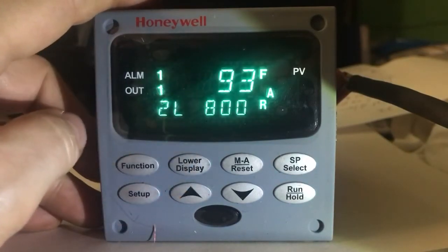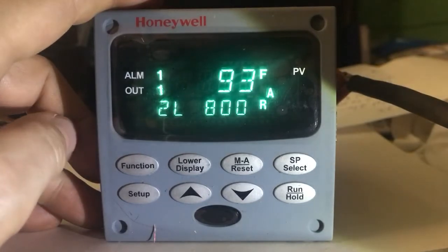This controller is actually set with two parameters, two set points. This is set point two, which is set at 800.